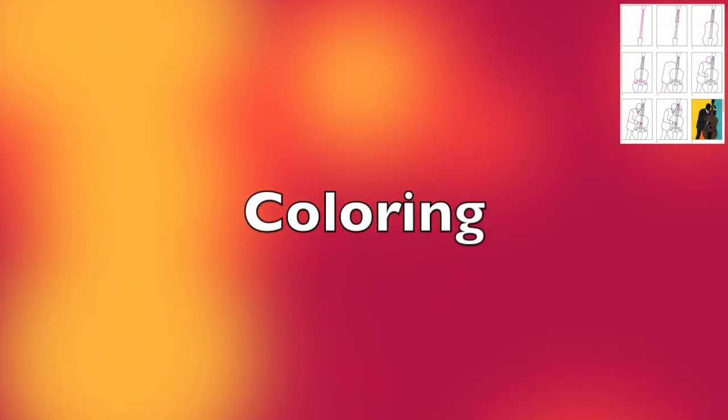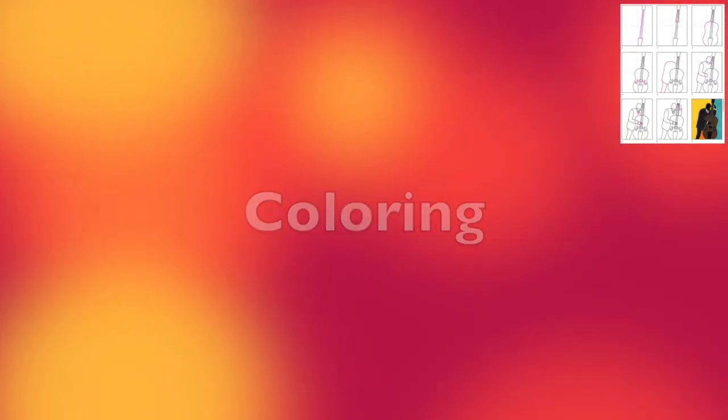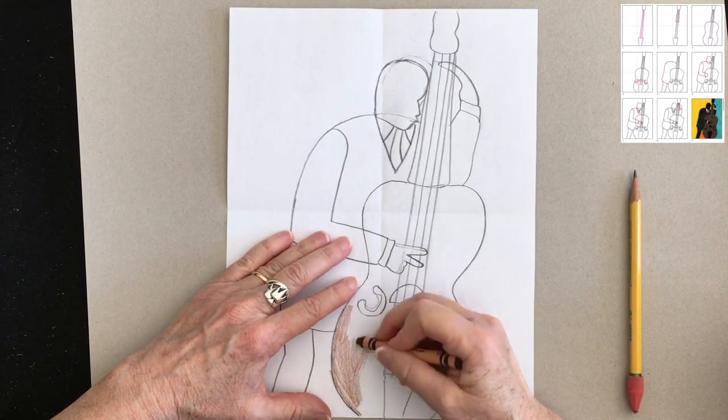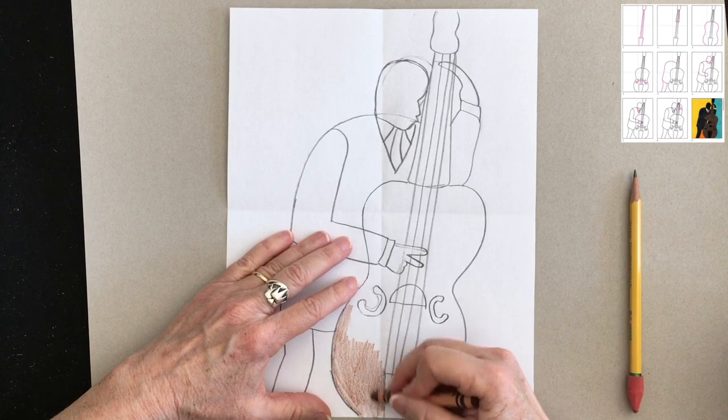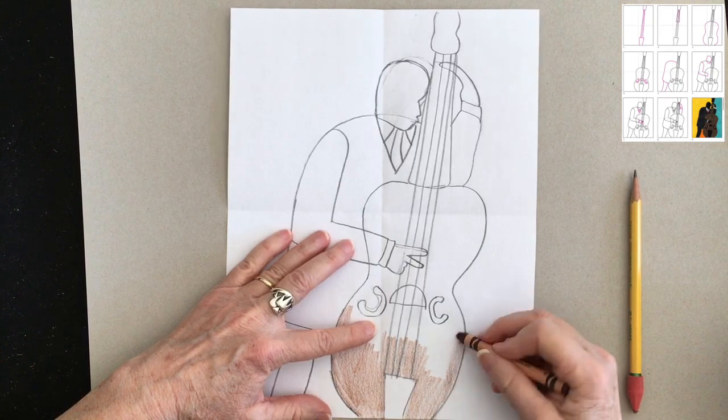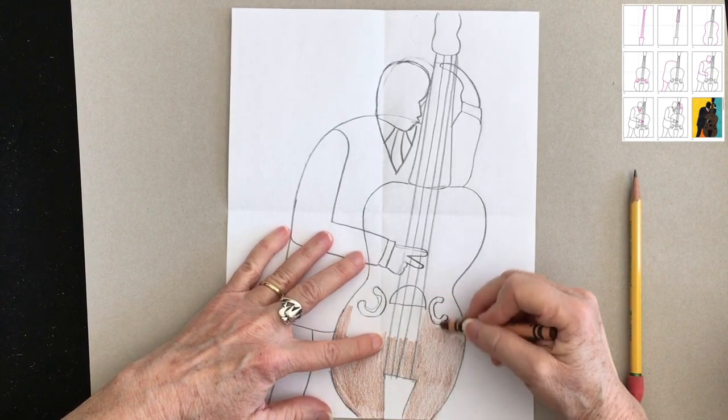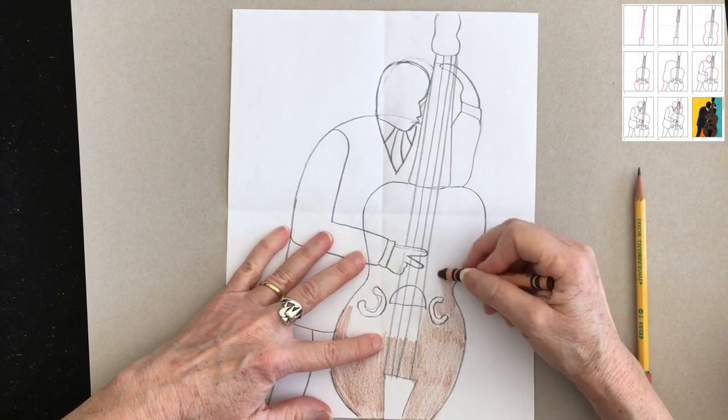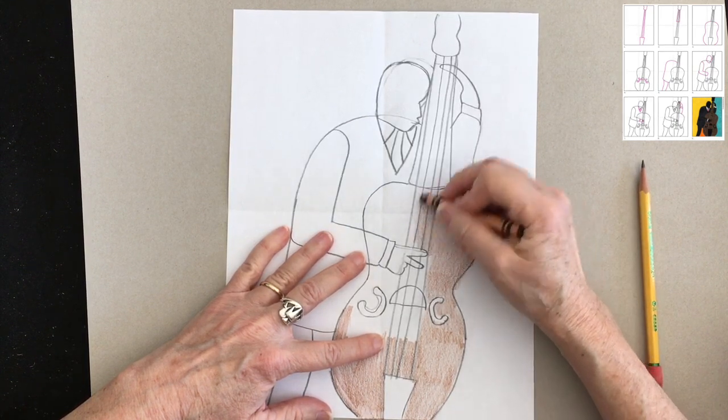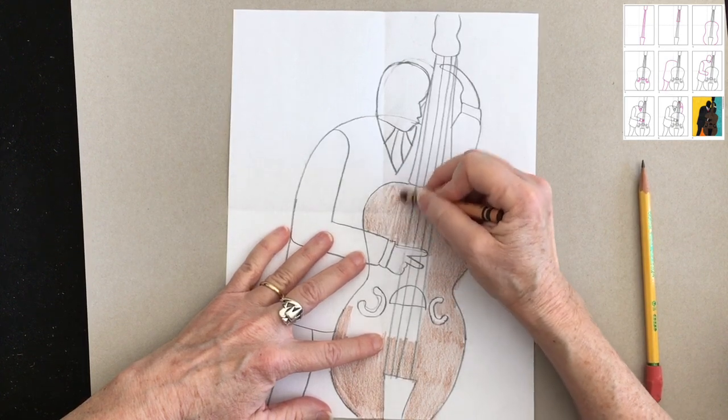And once I feel like my drawing is pretty clean, I'm going to start to color. And for this, I'm just going to use crayons. I'm doing some speed coloring here. And please remember, you do not have to do the same colors that are on the illustration. Maybe you could end up with a pink bass. I bet there is such a thing. Or maybe your bass is going to be blue.